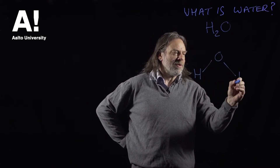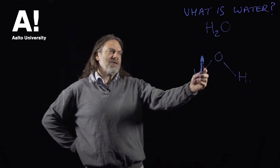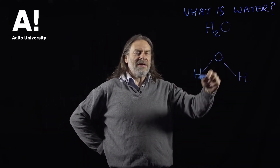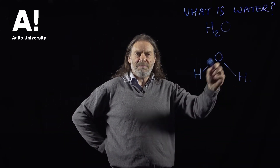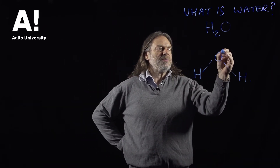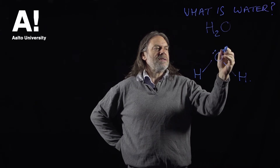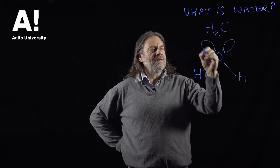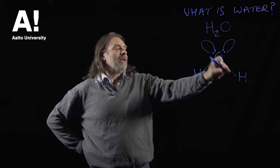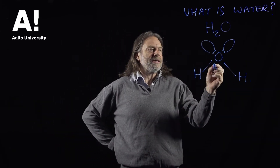This is the shape of a water molecule: two hydrogens, one oxygen. The oxygen sits at the middle of this bent structure, and the reason it's bent is because the oxygen atom has got these lone pairs of electrons that repel the hydrogen-oxygen bond like this.